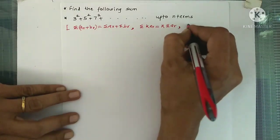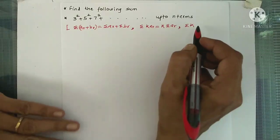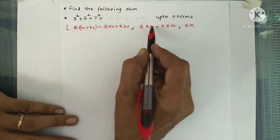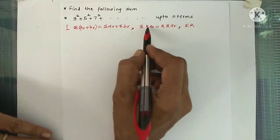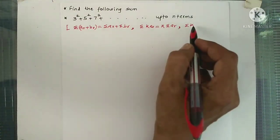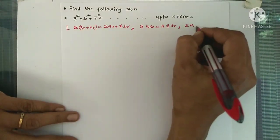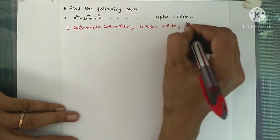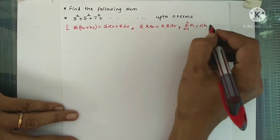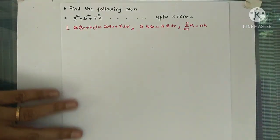The second property is: summation of k times ar — if a constant term is there, we put that constant outside the sigma notation, giving k times summation ar. The third property is: if the term is only a constant k, independent of r, then the sum equals n times k, provided r goes from 1 to n.